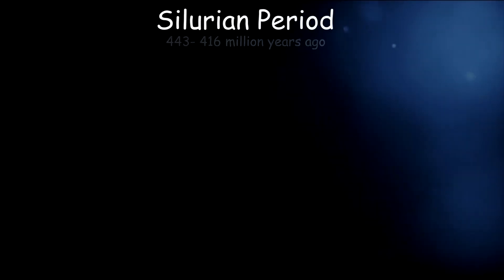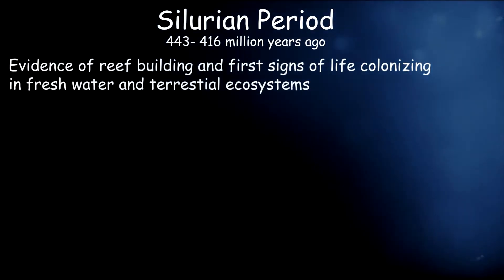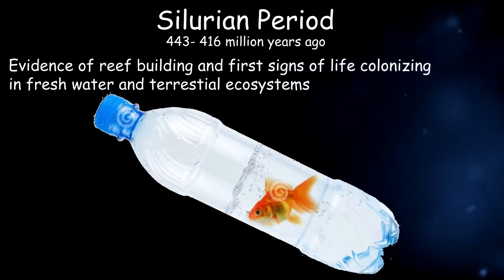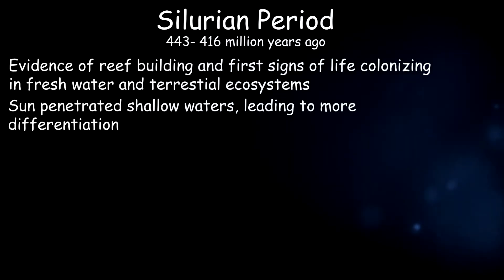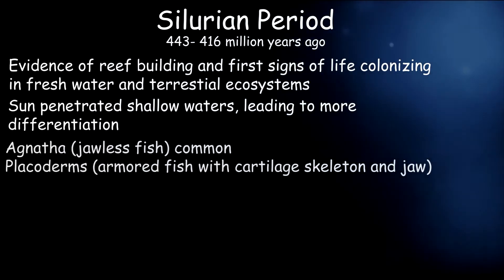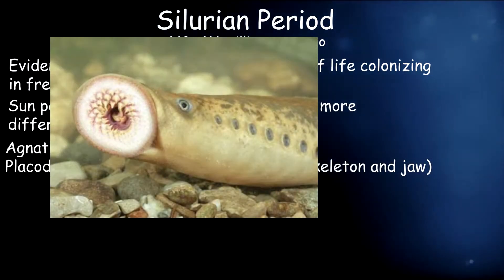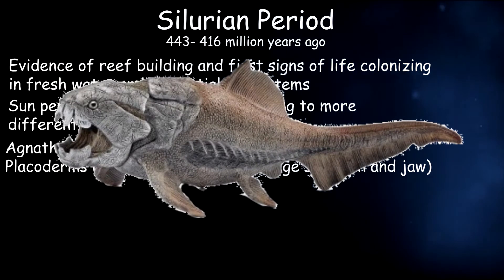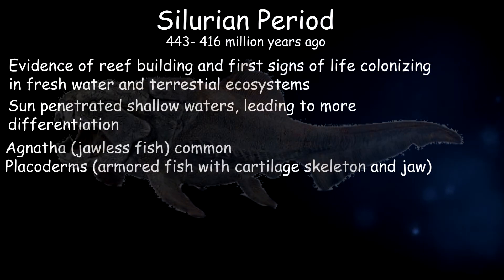The third period of the Paleozoic Era was the Silurian Period. The fossil record showed evidence of refilling and the first signs of life colonizing freshwater and terrestrial ecosystems. Due to the shallow waters, sunlight penetrated, allowing marine animals to undergo rapid differentiation. The jawless fish, the Agnatha, was the most common in the ocean. Another common fish group was the Placoderms — the first primitive armored fish with a cartilage skeleton that developed a jaw.